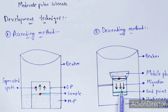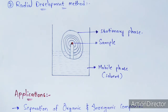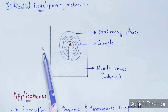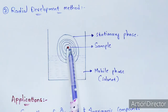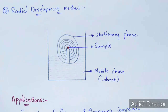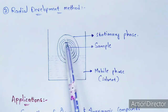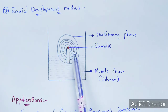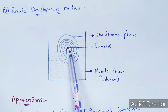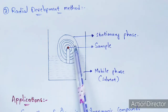The ascending method is mostly used. The descending method is used only in rare cases. In the radial development method, the sample is placed at the middle of the stationary phase, and the paper should be in a circular form.